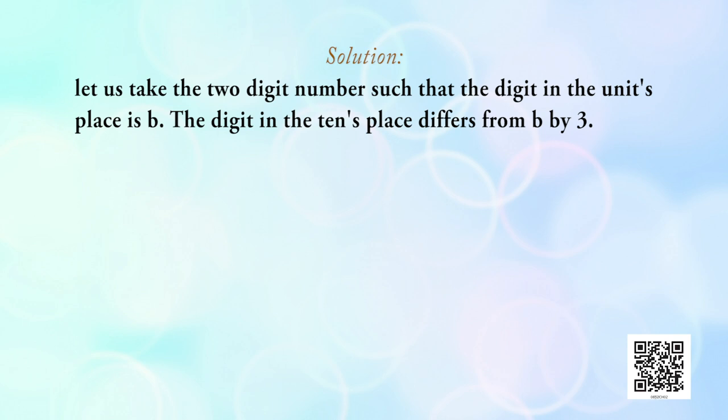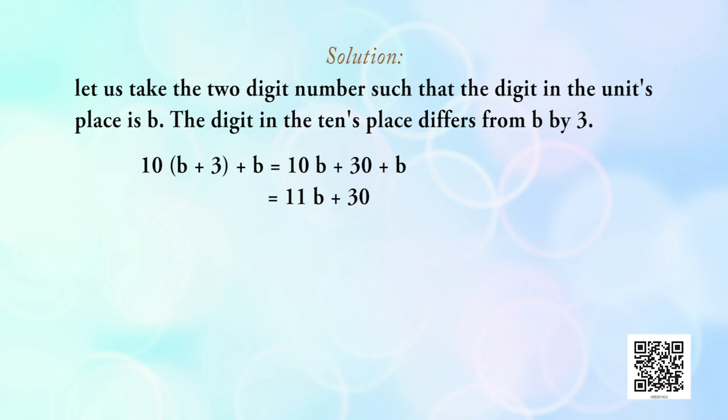The digit in the tens place differs from b by 3, so the tens digit is b + 3. Therefore the two-digit number is 10(b + 3) + b = 10b + 30 + b = 11b + 30. With the interchange of digits, the resulting number becomes 10b + (b + 3) = 11b + 3.